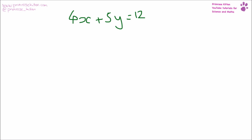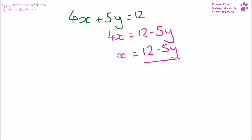Here, let's make x the subject of the formula. I want to get everything that is an x over to the right-hand side. So that is 4x = 12 − 5y, and then because x is times by something, I want to get rid of that. So x = (12 − 5y) over 4.